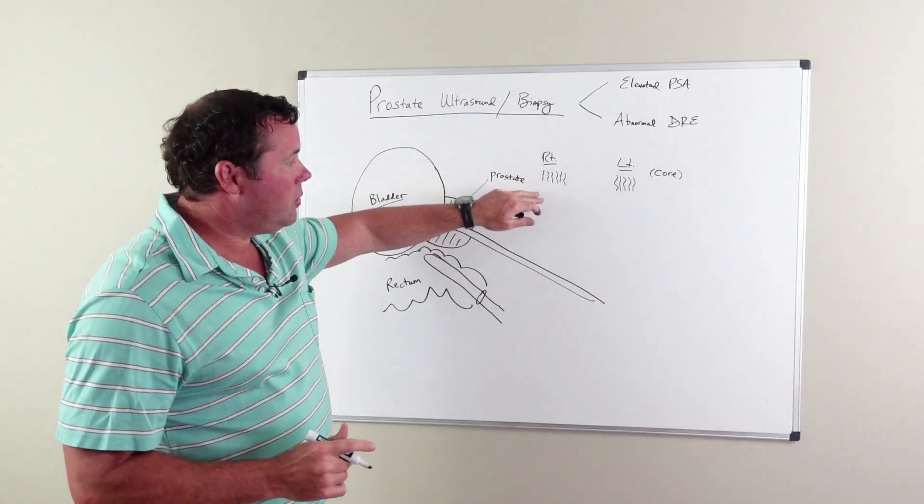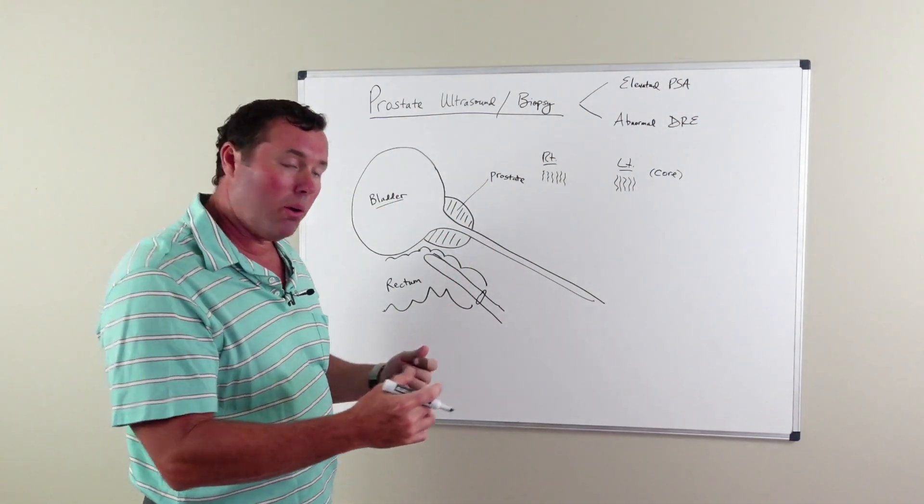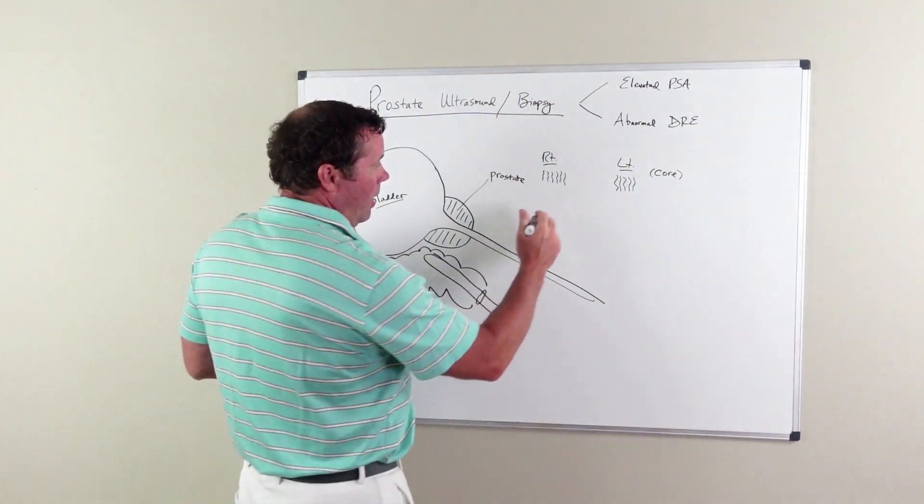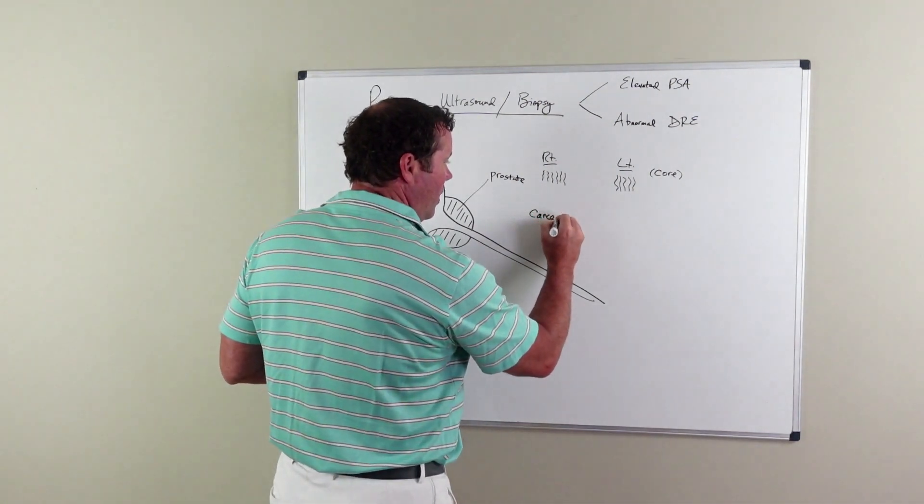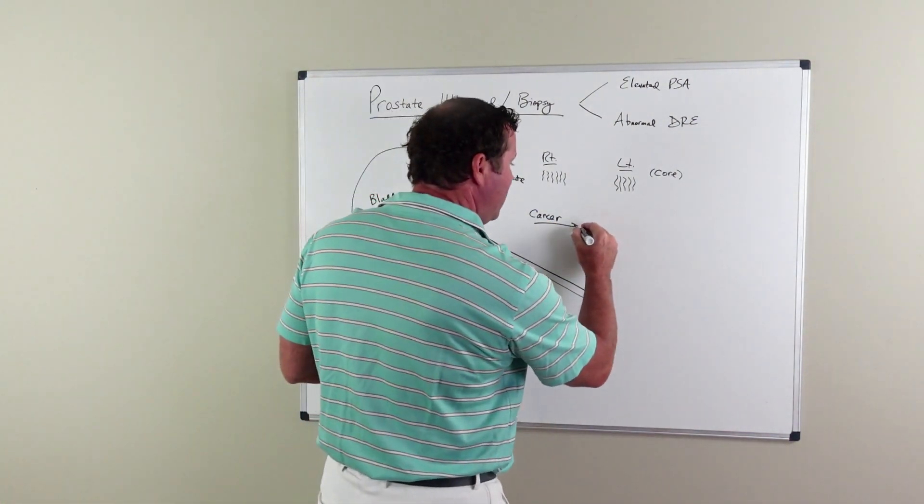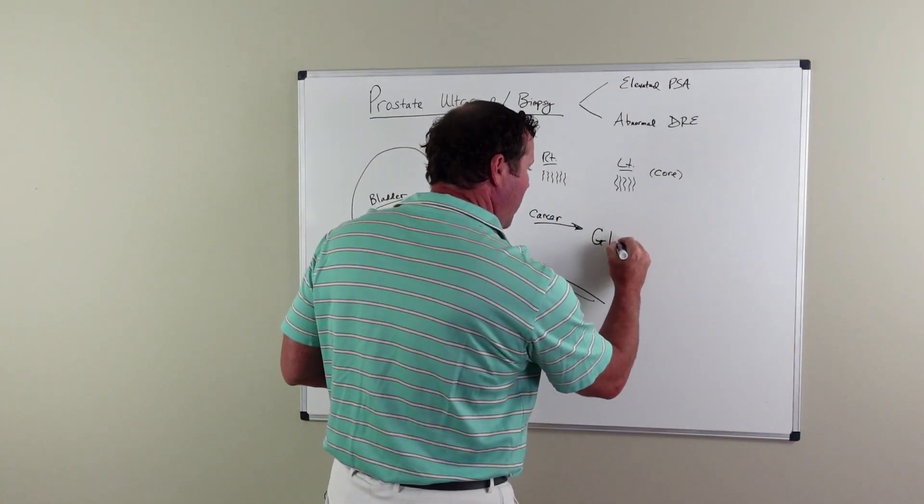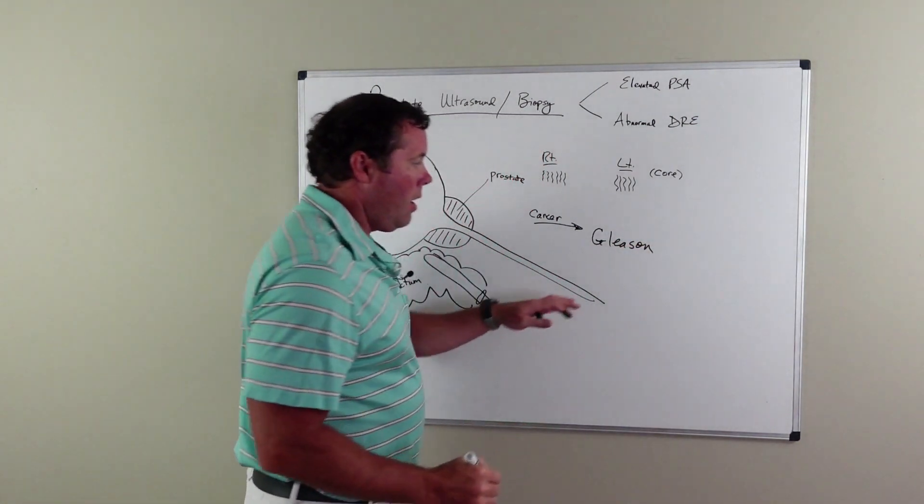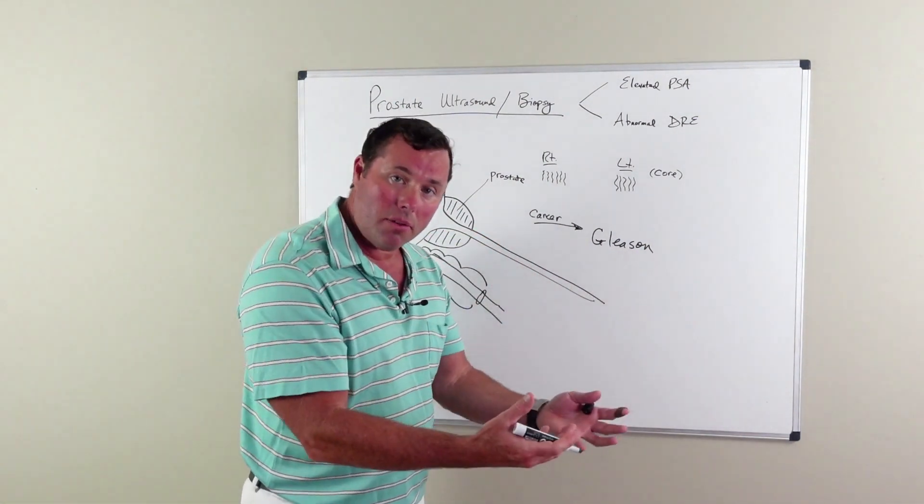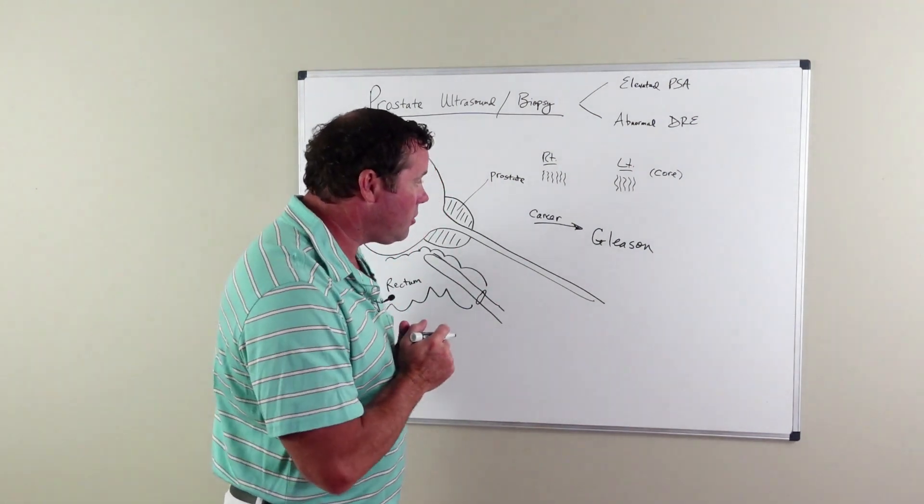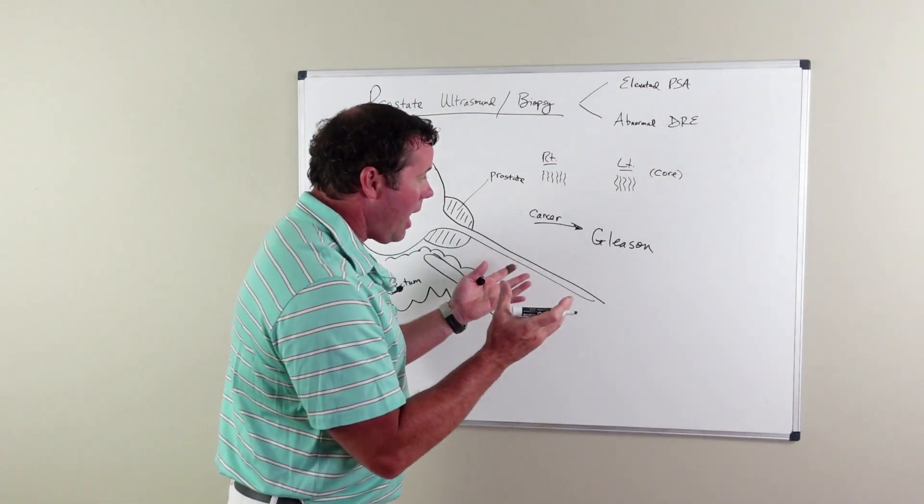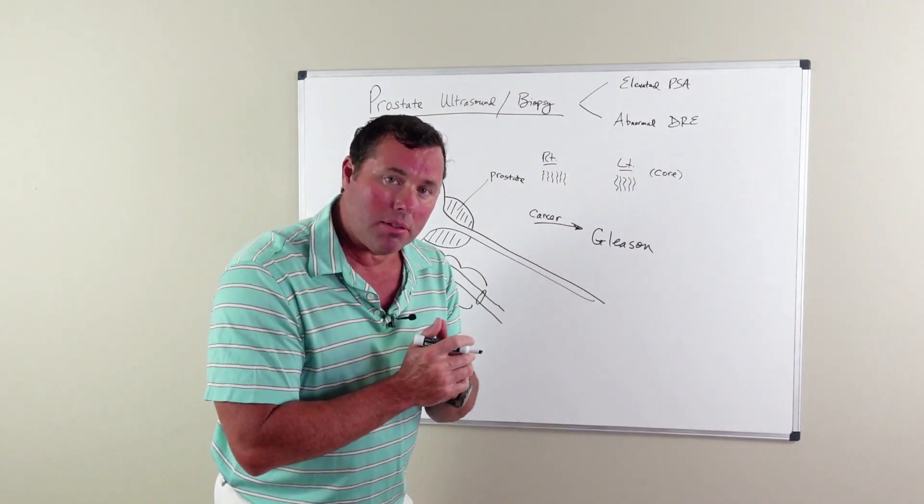What the pathologist will do is stain these cores and then look at them under the microscope for presence of cancer. If there's cancer present, the pathologist will then grade the cancer, and the grading system for prostate cancer is called the Gleason score. This Gleason score translates essentially into the aggressiveness of cancer - just simply how aggressive the cancer is.